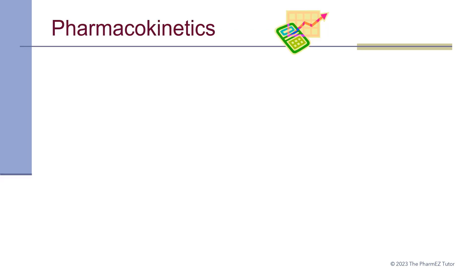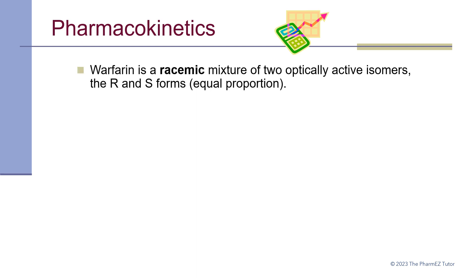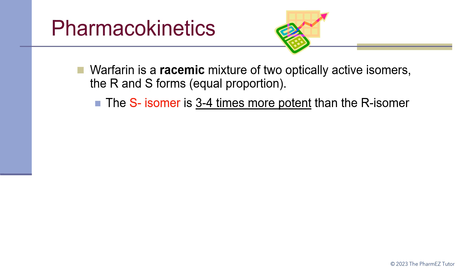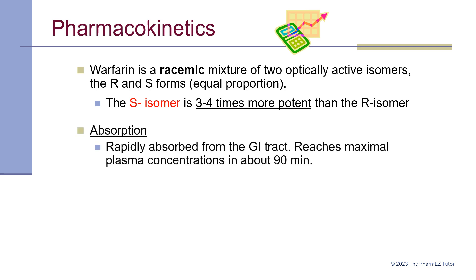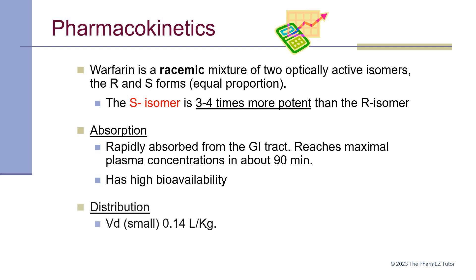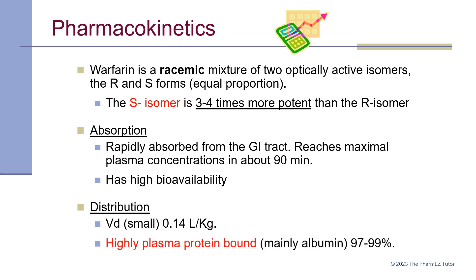Warfarin is a racemic mixture of two optically active isomers, the R and S forms, in equal proportion. It is important to note that the S isomer is 3 to 4 times more potent than the R isomer. As far as absorption, it is rapidly absorbed from the GI tract, reaching maximum plasma concentrations in about 90 minutes, with high bioavailability. With regards to distribution, it has a small volume of distribution of 0.14 liter per kilogram, and it is highly plasma protein bound, mainly to albumin, about 97 to 99 percent.